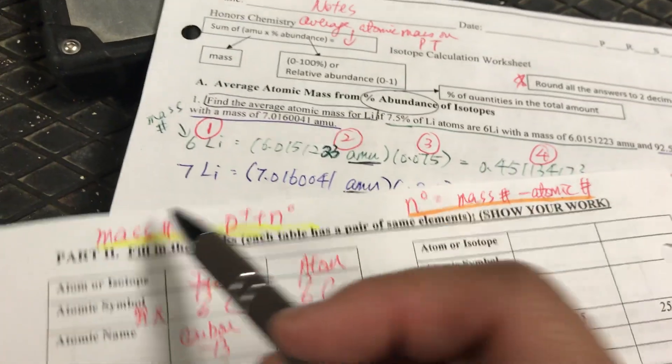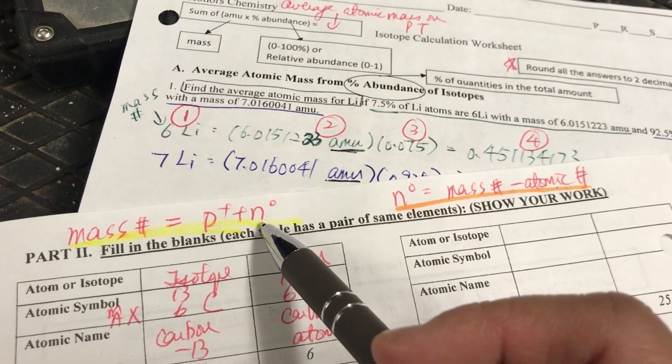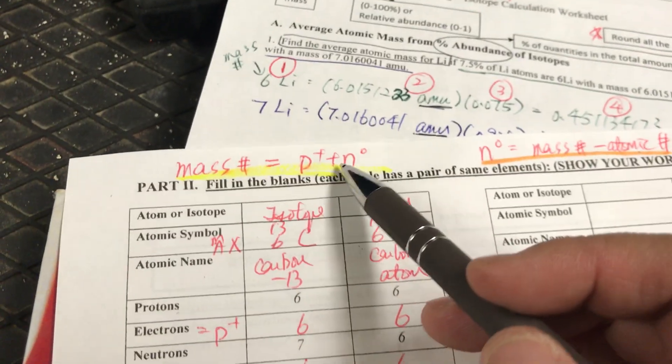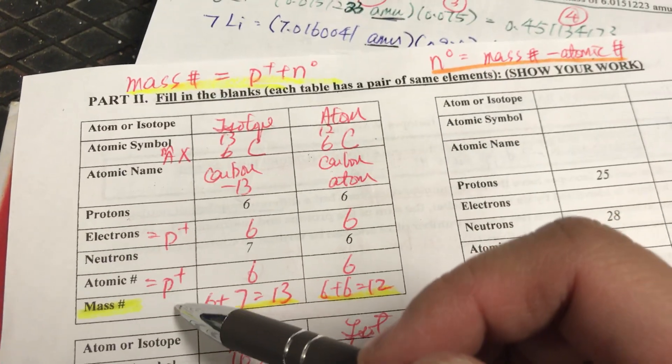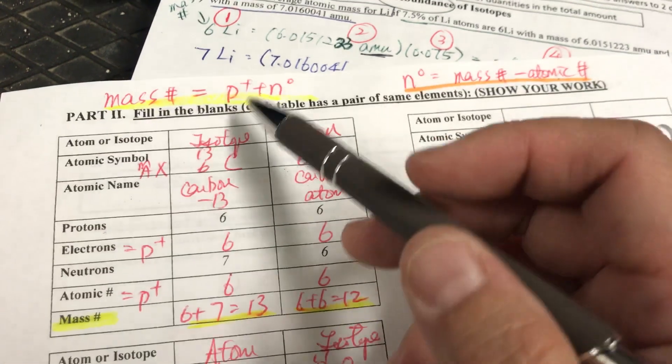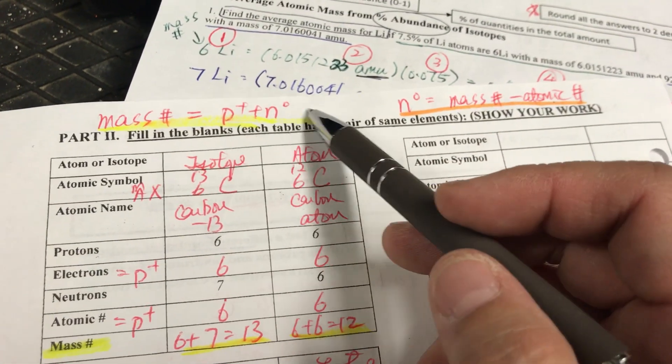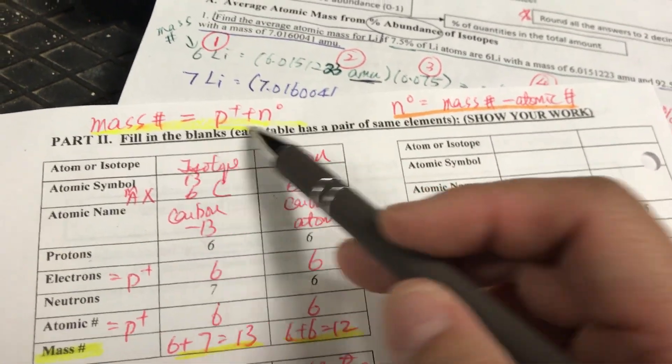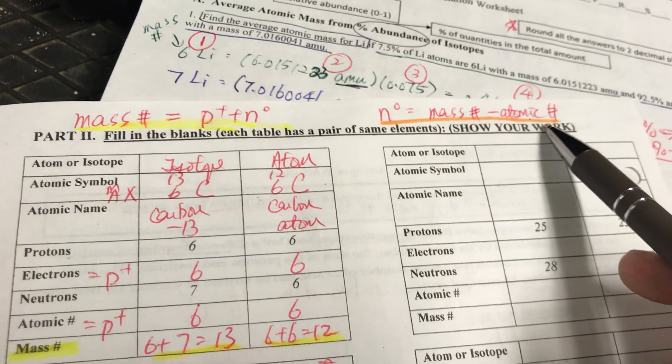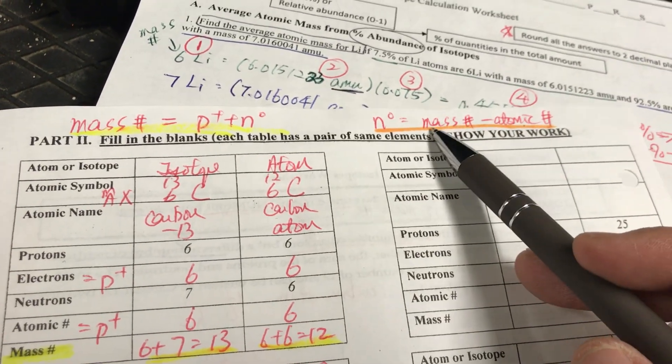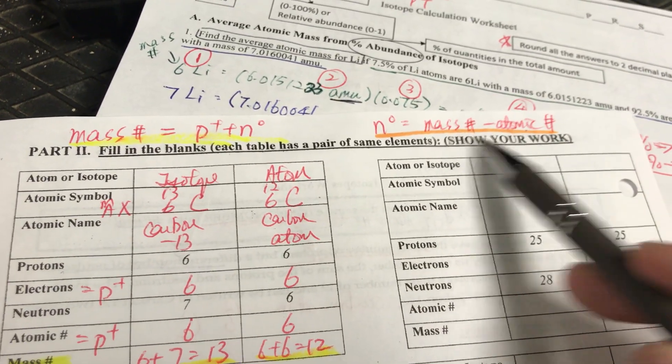Now, there are two formulas you need to write. First is the mass number equals proton plus neutron. Why do we have to add the proton plus neutron? Because we don't give you atomic mass here. So how can you find the mass number is how many protons and how many neutrons totally add up. The other one that you've seen before is the neutron equals mass number minus atomic number.